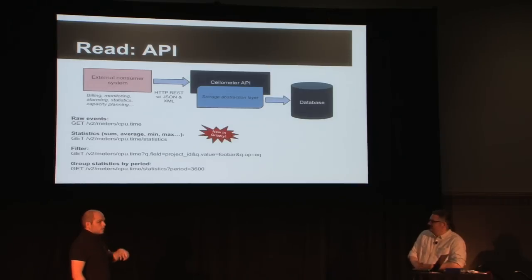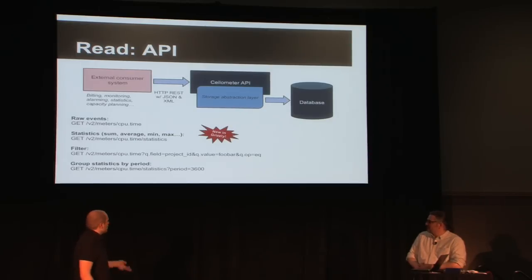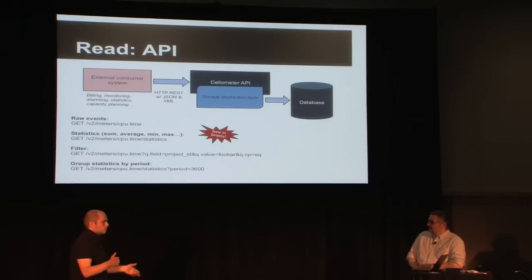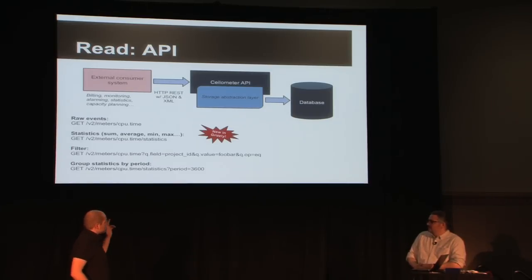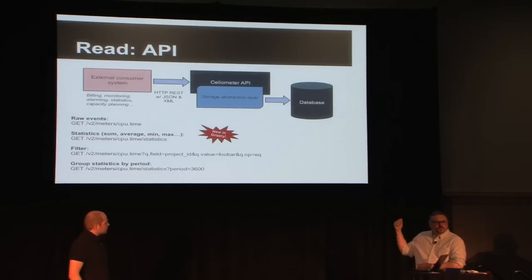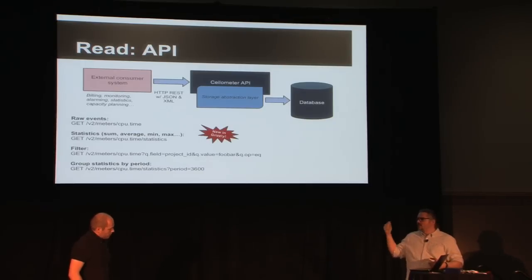We have advanced filtering mechanisms — the kind that won't work in SQL backends or HBase, but work fine in MongoDB for metadata fields. You can also do statistics by periods: you can select a range and divide statistics by hour, day, or whatever you want. This will evolve a lot in Havana because we still have many ideas. If you already use Ceilometer and built an application using the V1 API, don't worry — we are going to continue maintaining the V1 API for at least three more releases.